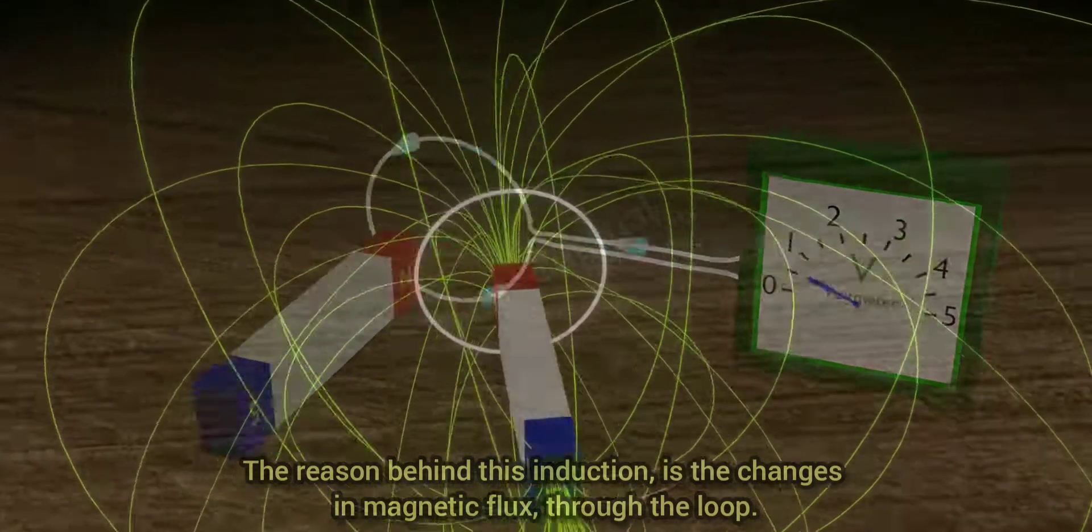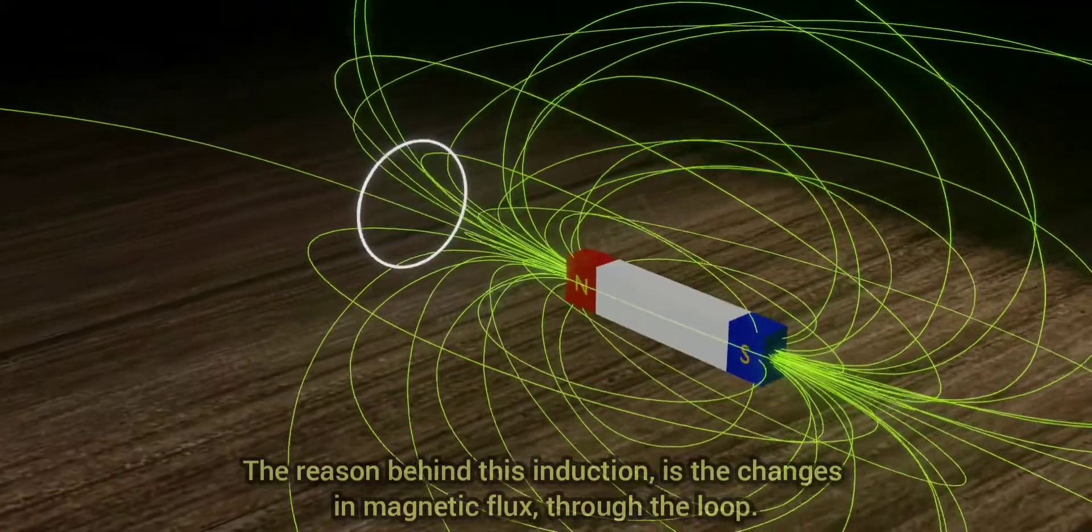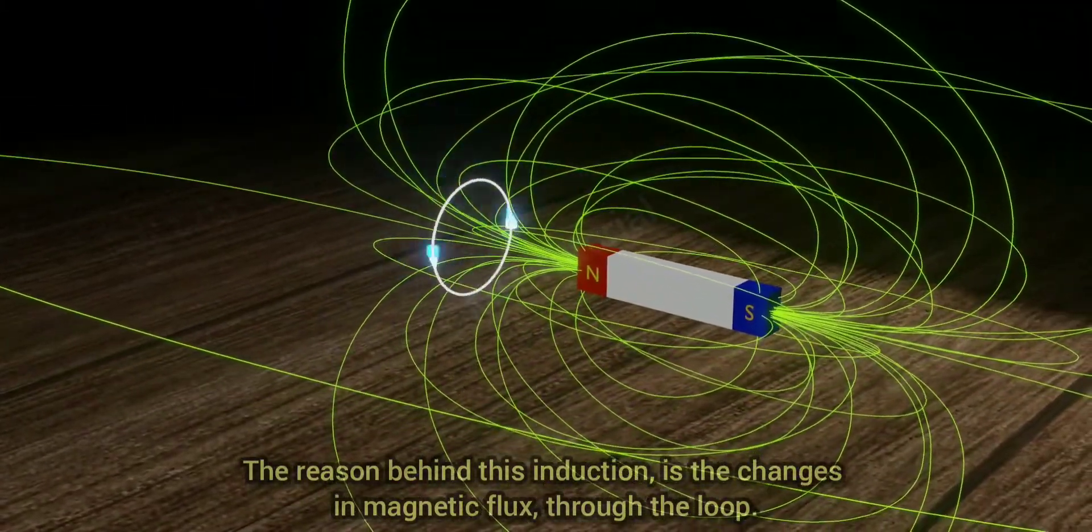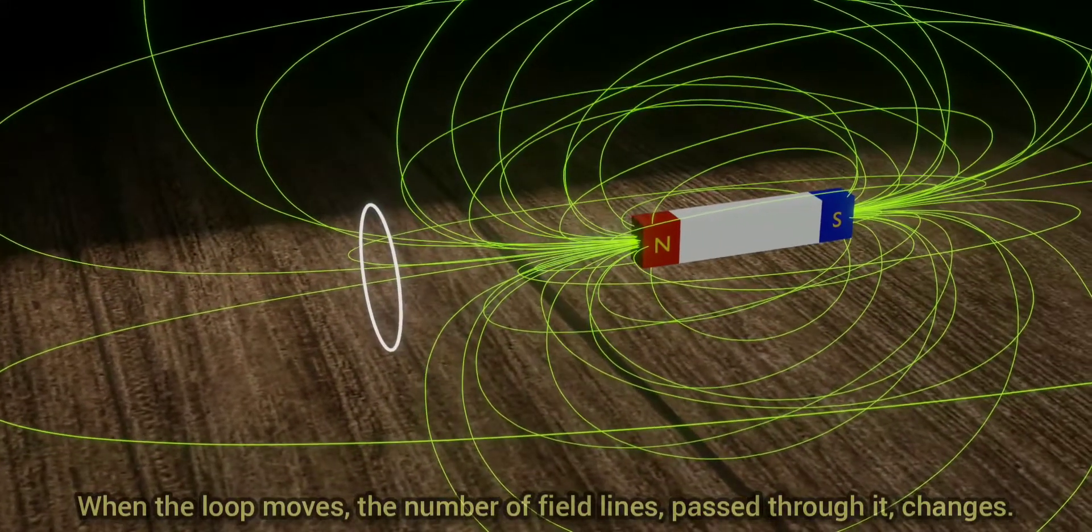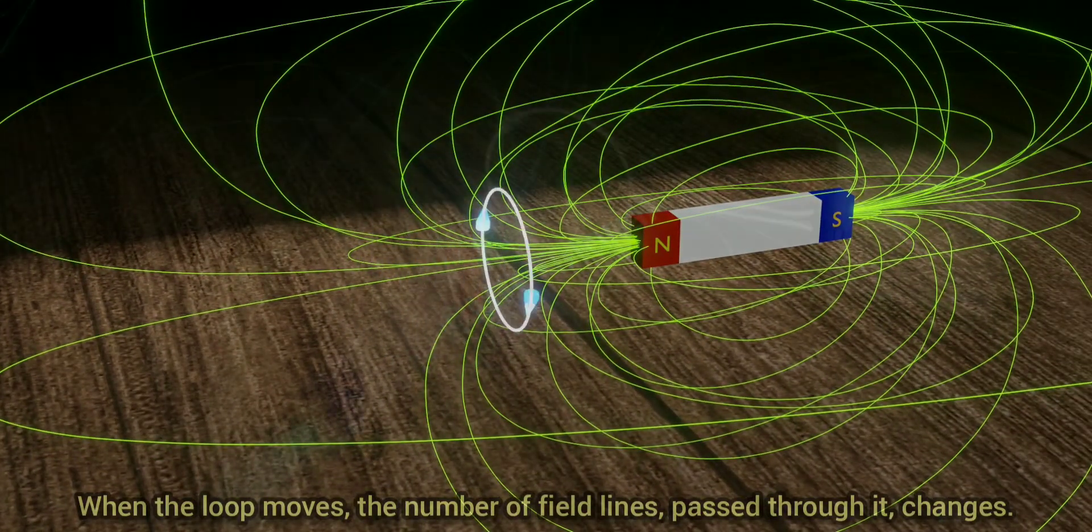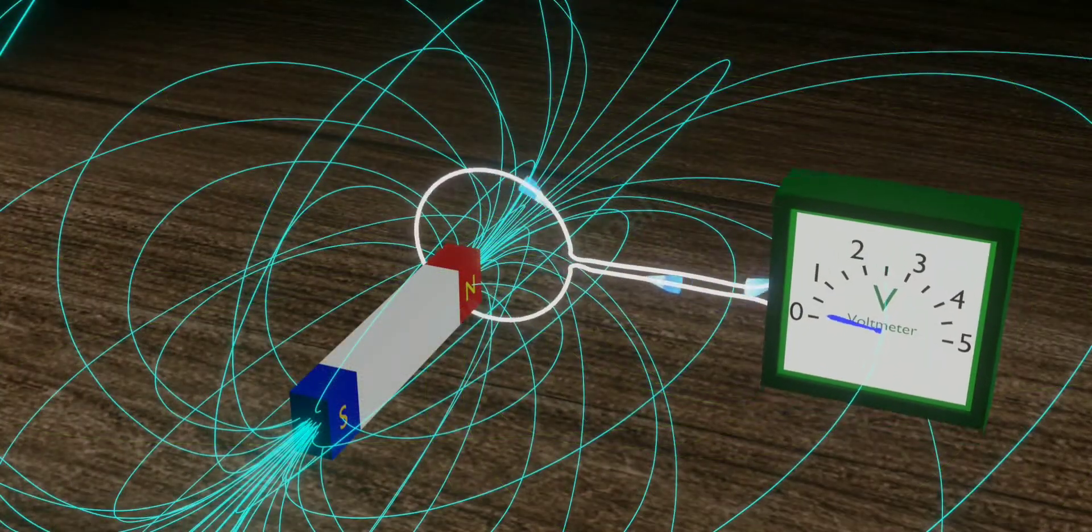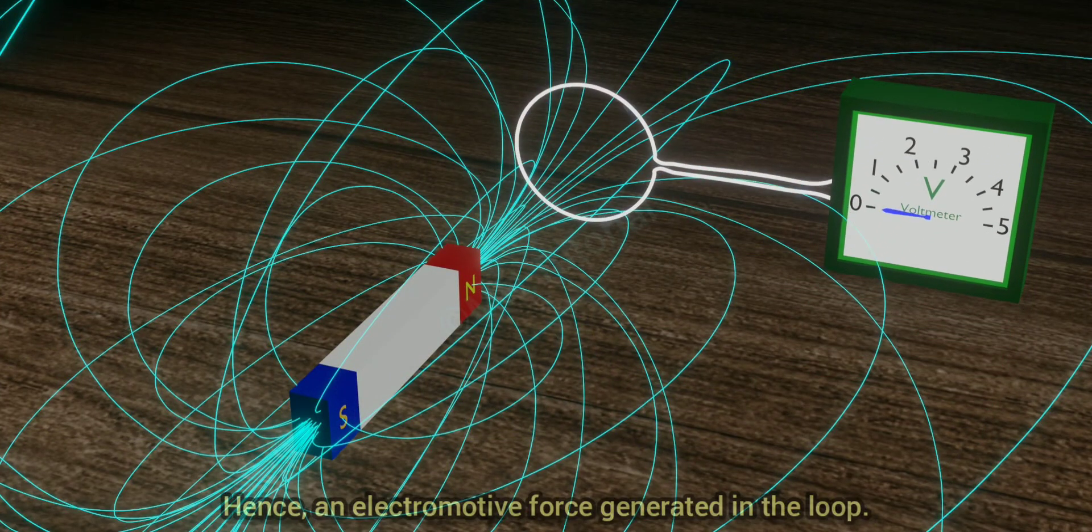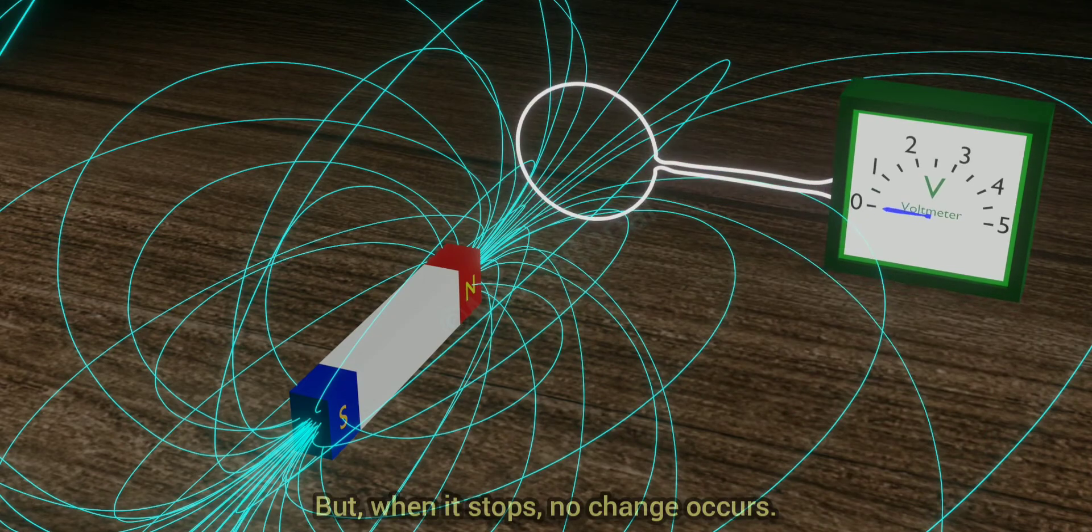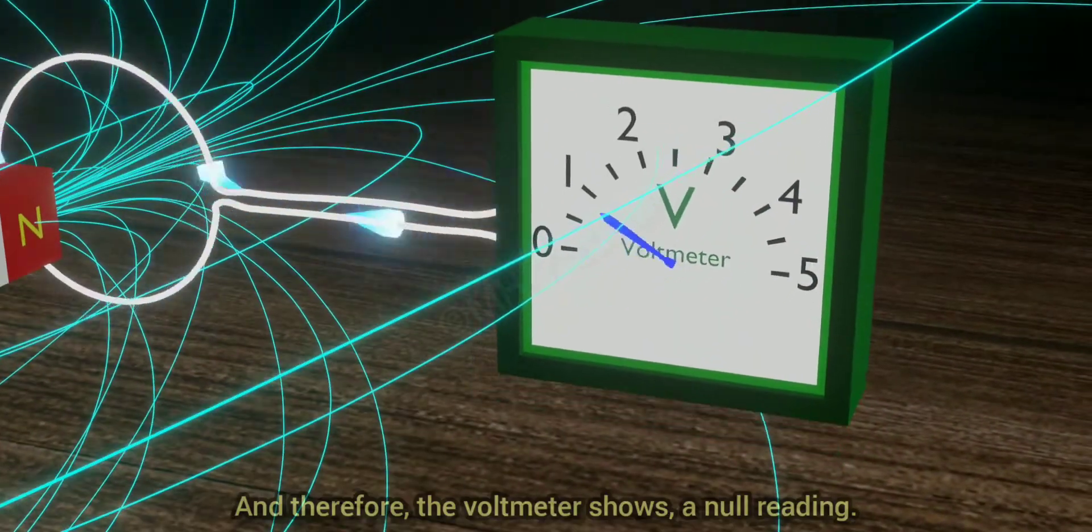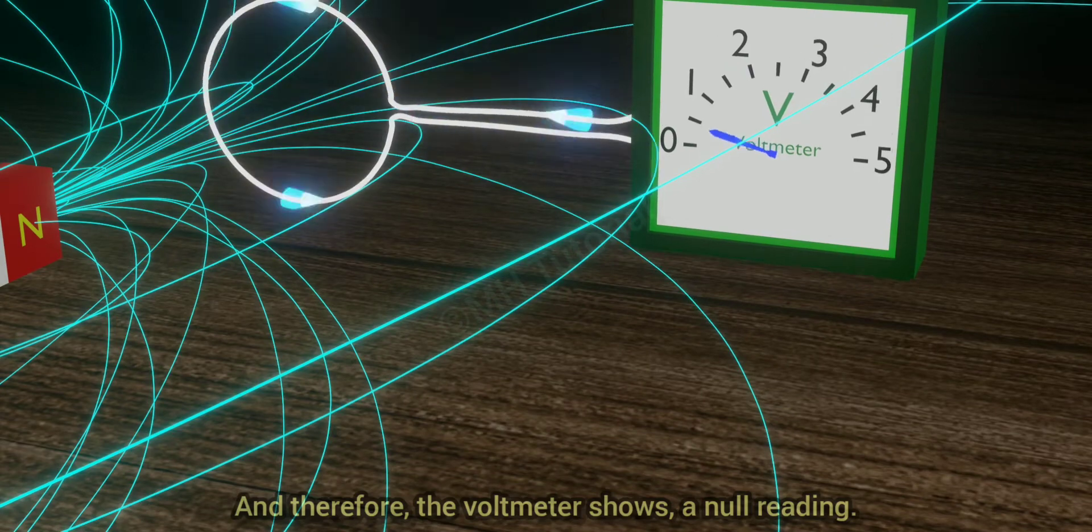The reason behind this induction is the changes in magnetic flux through the loop. When the loop moves the number of field lines passed through it changes. Hence an electromotive force is generated in the loop. But when it stops no change occurs and therefore the voltmeter shows a null reading.